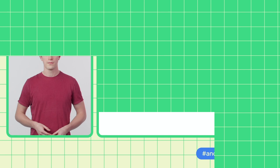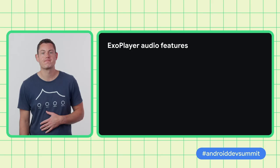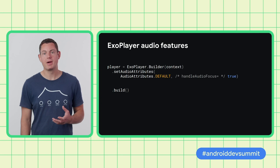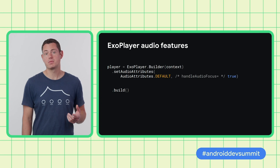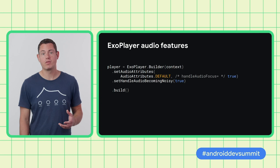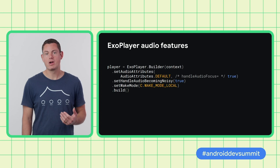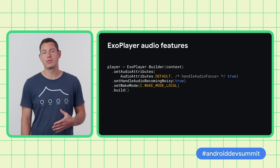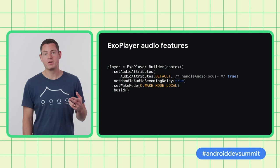ExoPlayer has a number of features that are useful when you're playing audio by itself or an audio track which is part of a video. Firstly, to coordinate audio playback with other apps, ExoPlayer can handle audio focus automatically — meaning when your app starts playing, audio from other apps is faded out automatically. Secondly, becoming noisy handling takes care of pausing playback automatically if the audio path changes in a way that would cause a sudden noise, like when disconnecting headphones and switching to a device speaker. Finally, specifically for background audio playback, ExoPlayer can take care of acquiring and releasing wake and Wi-Fi locks so the device doesn't sleep when playing audio with the screen off. This functionality is turned off by default, so you need to explicitly enable it.